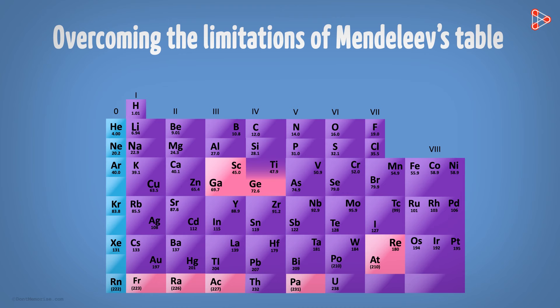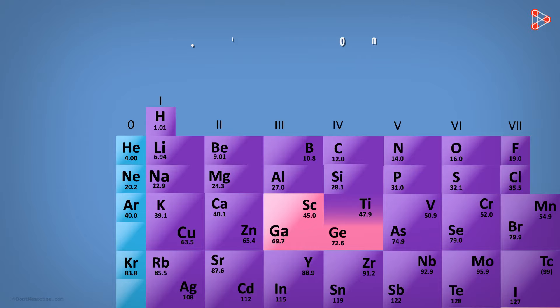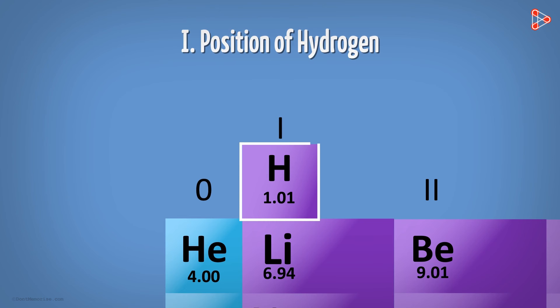And how did that happen? Do you remember the limitations? The first limitation of no precise position for hydrogen was mainly overcome. It was assigned a position that would not lead to any confusion. We will take a detailed look at this position of hydrogen later in the higher grades.